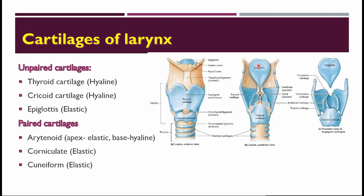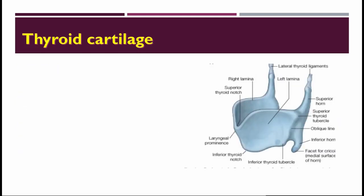To summarize: corniculate, cuneiform, and epiglottis are all elastic type cartilages, whereas the thyroid and the cricoid are hyaline type cartilages. The arytenoid cartilage is mixed — some parts are elastic and the remaining parts are hyaline in nature.